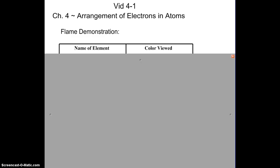Hey chemistry students, this is video 4-1 and we are beginning chapter 4, which is the arrangement of electrons in atoms. We're going to look at how electrons behave and how we can visually tell what electrons are doing just based on what we see. We can really start looking at this with a flame test demonstration.